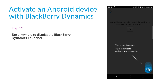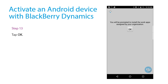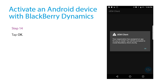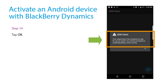Tap anywhere to dismiss the BlackBerry Dynamics Launcher info screen. Tap OK. In this example, the notification tells you that your organization has assigned the BlackBerry Work app to you and that you will be prompted to install it. Tap OK.